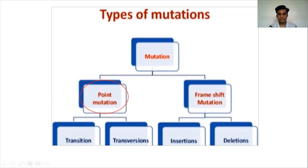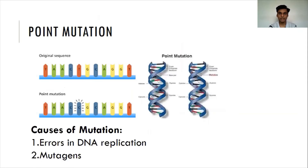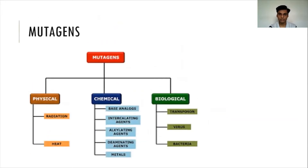The major causes of point mutation are errors in DNA replication and mutagens. Mutagens are chemicals and radiations which affect the DNA structure. Small changes in DNA are called microlesions or point mutations and larger changes are called macrolesions, which are less common. These include large insertions, deletions, inversions, duplications and translocations of nucleotide sequences.